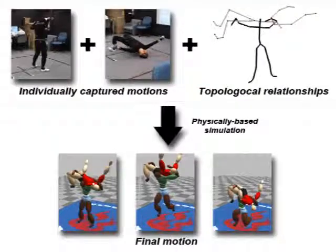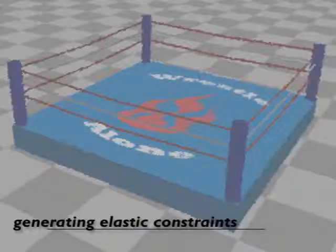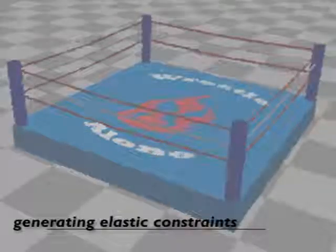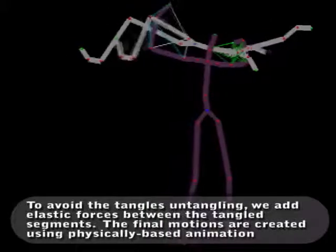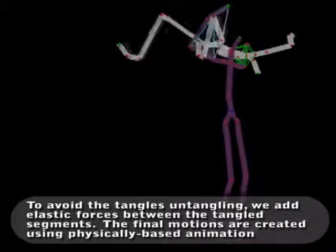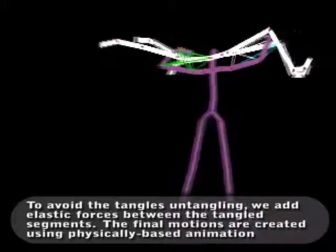Thirdly, the motion data of both avatars are edited according to the topological relationships specified. To avoid the tangles untangling, we add elastic forces between the tangled segments. The final motions are created using physically based animation.